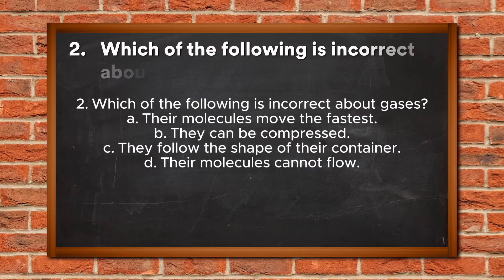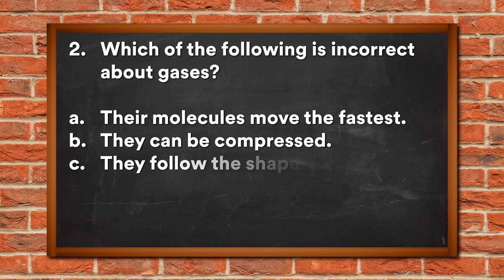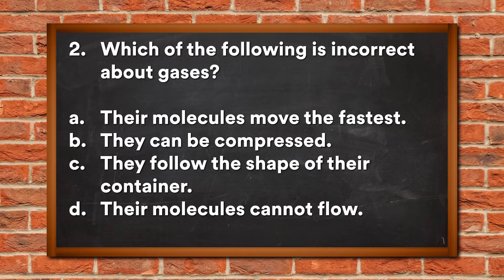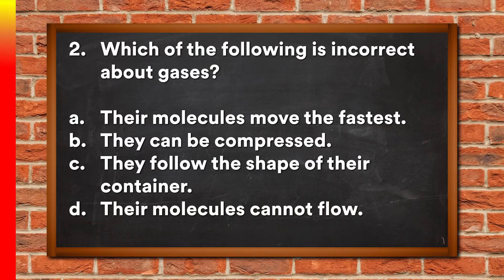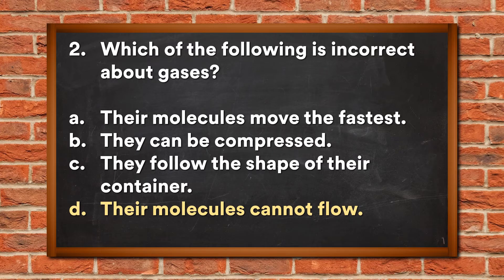Question 2: Which of the following is incorrect about gases? A. Their molecules move the fastest, B. They can be compressed, C. They follow the shape of their container, D. Their molecules cannot flow. The answer is D, Their molecules cannot flow.